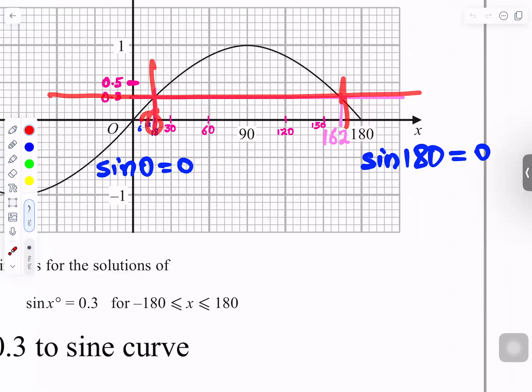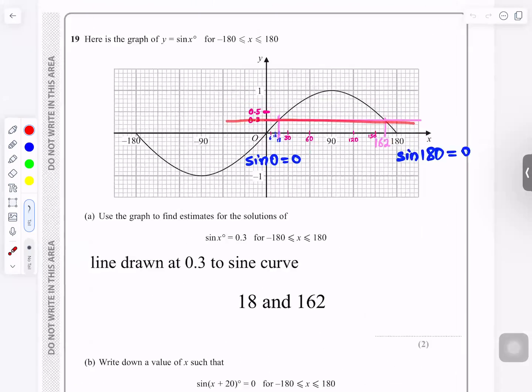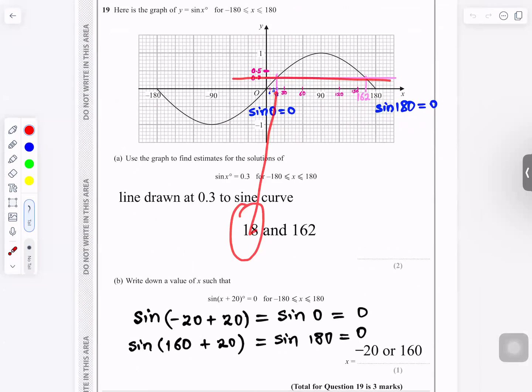And you come down where it meets there. That's the answer there. Where it meets, that's the answer there. You draw a line at 0.3. And the answers would be 18 and it would be 162.